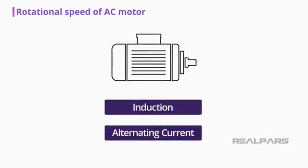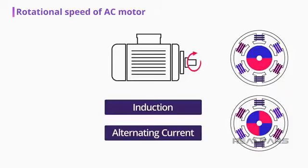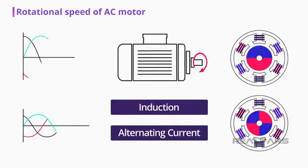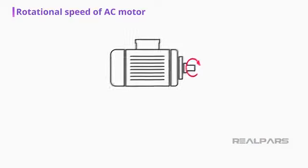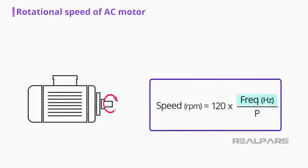Induction or alternating current electric motors rotate at a rate that is set by the number of poles inside the motor itself and the power supplied. The frequency is directly related to the revolutions per minute or RPM of a motor. The higher the frequency, the faster the RPM or the higher the engine rotation speed.